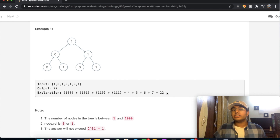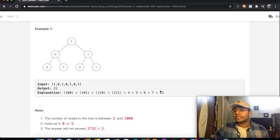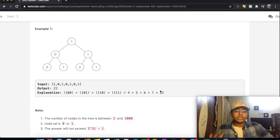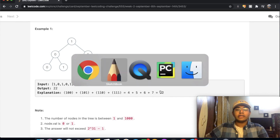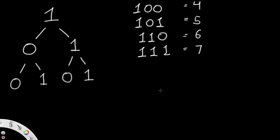So now we're going to see how we can get that value of 22 and what steps we need to take to solve this question. I have the same tree here — these are the four paths. 100 represents the number 4, then 101, 110, 111, and these are all their decimal equivalents.